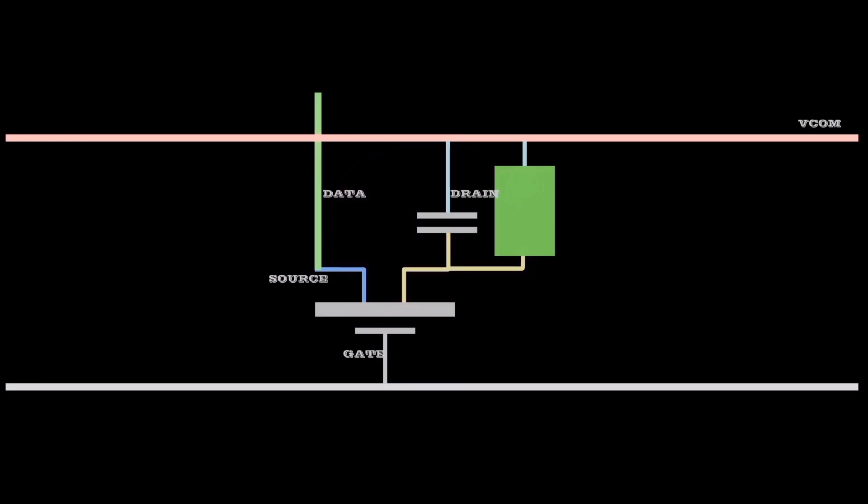The source of the transistor receives data, which control light passing through the crystal to filter color.